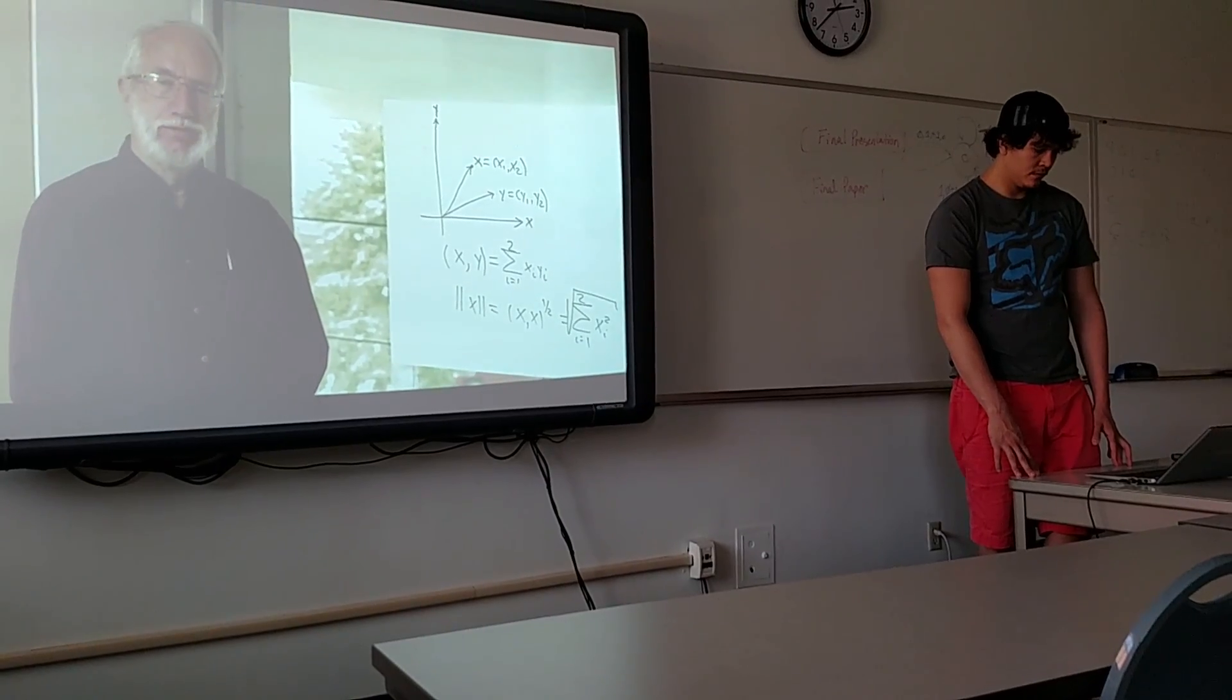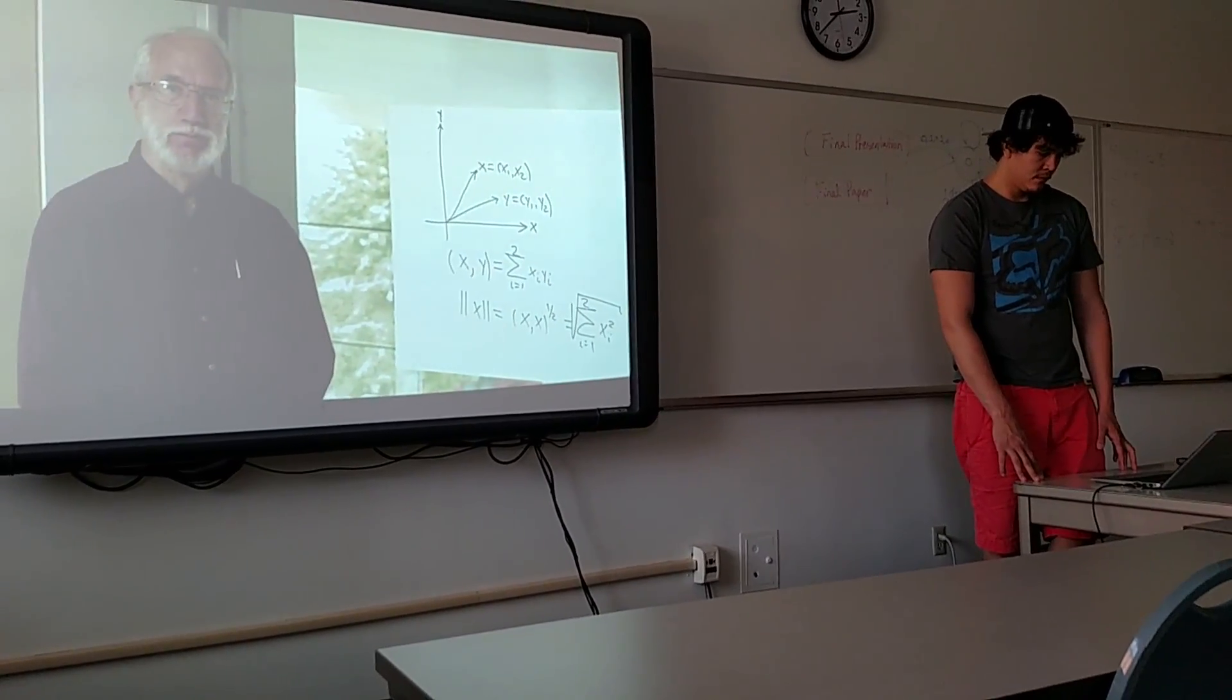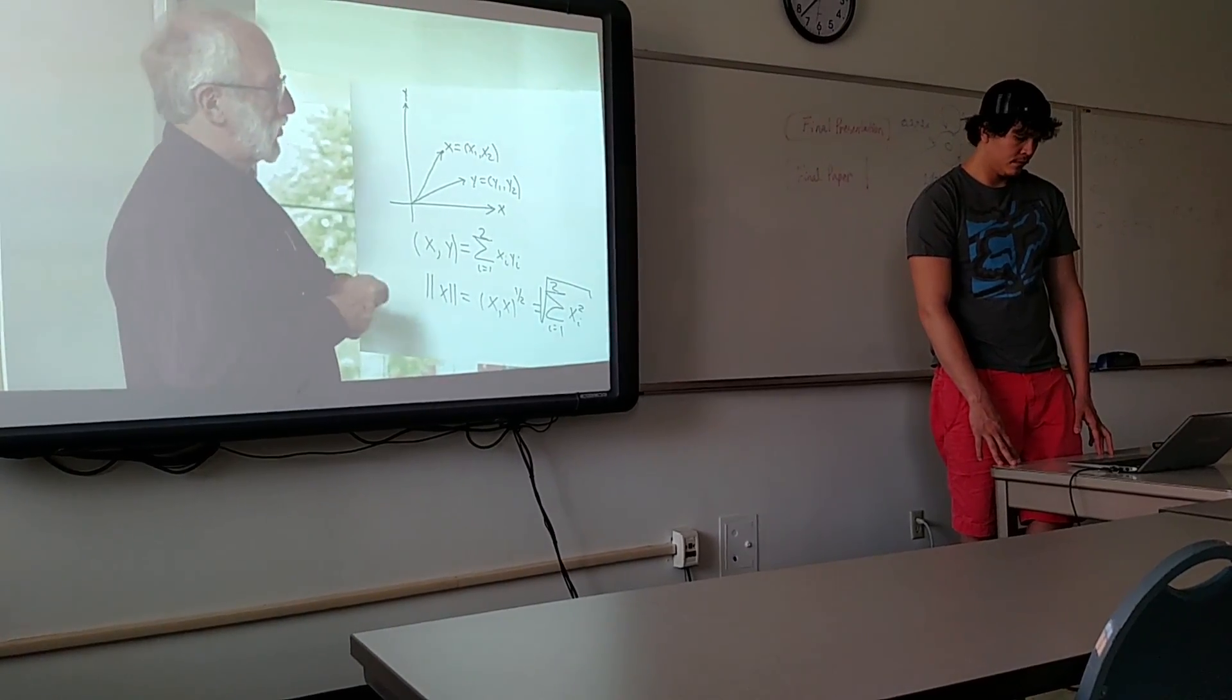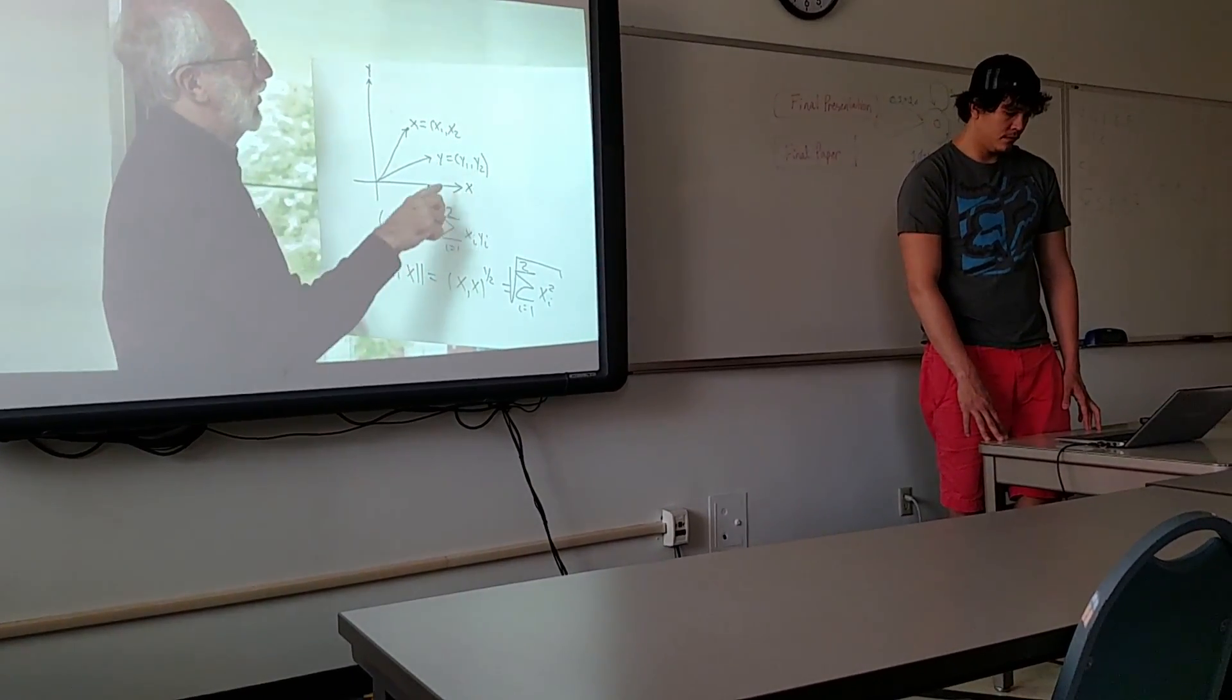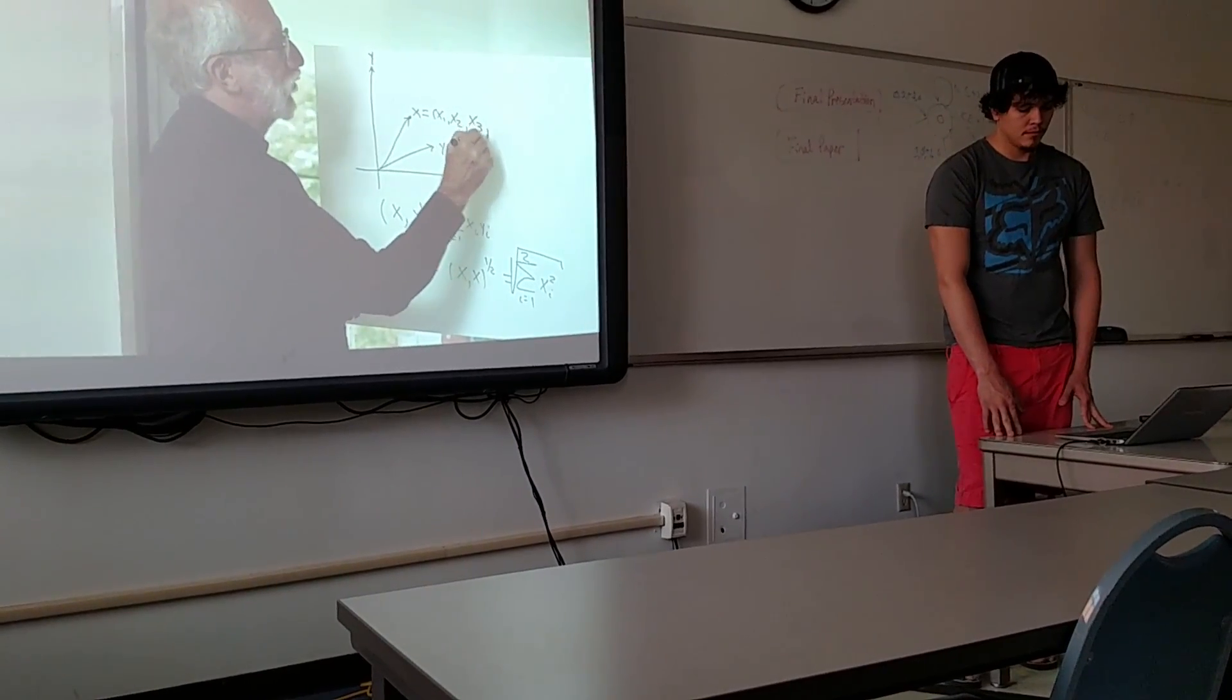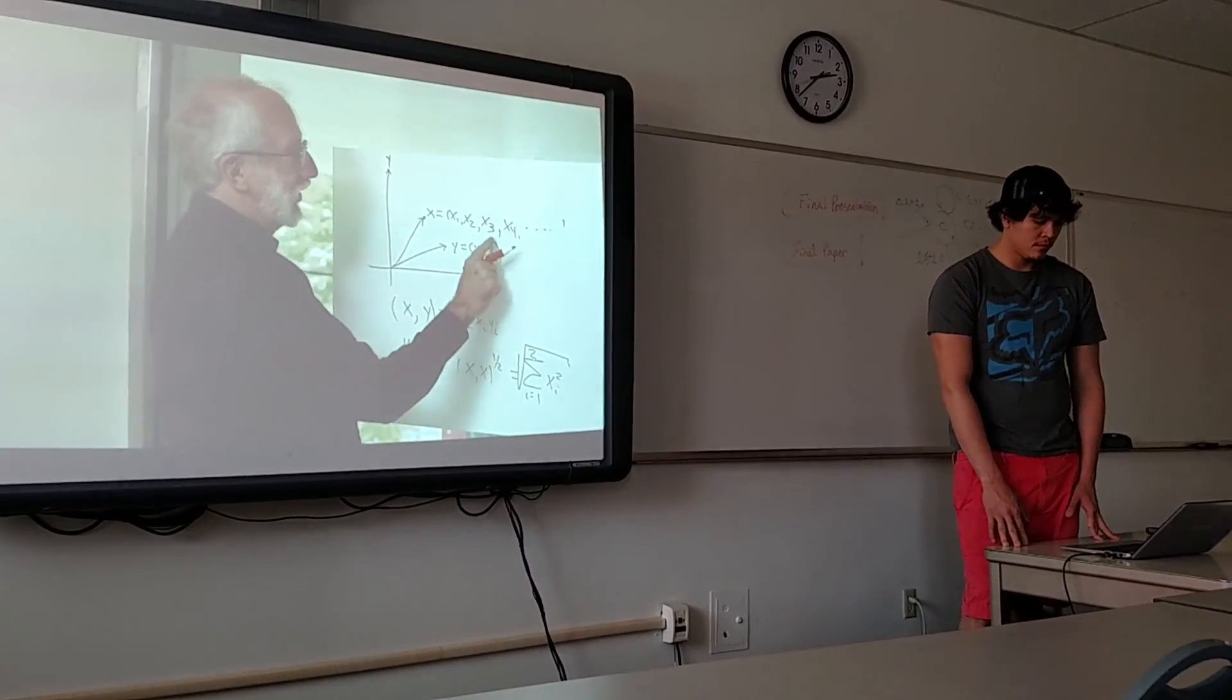Now, Hilbert space is a generalization of this idea from the two dimensions to infinity of dimensions. So, in particular, instead of having a vector x1, x2, no longer in the plane, it's an infinite number of coordinates, all the way up to infinity.